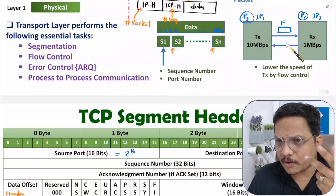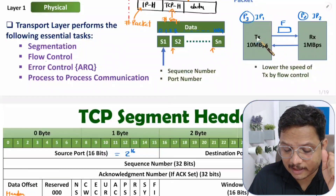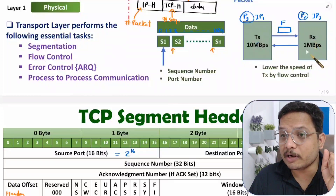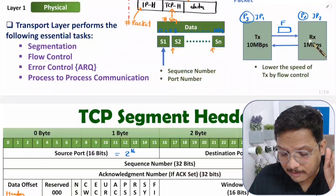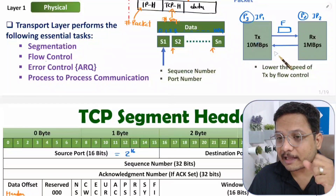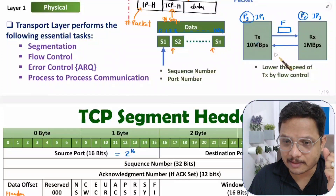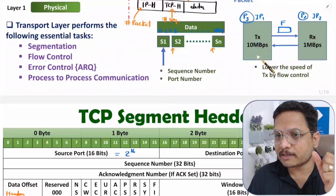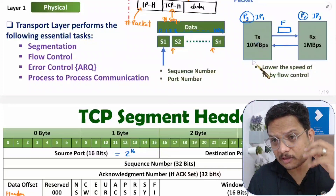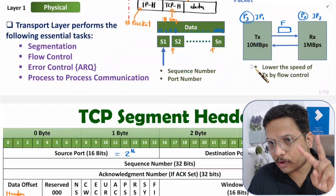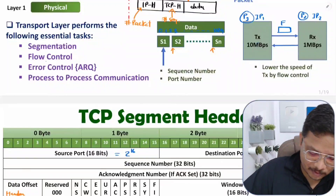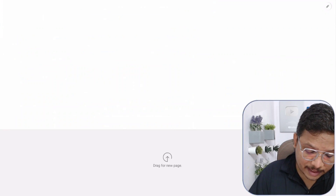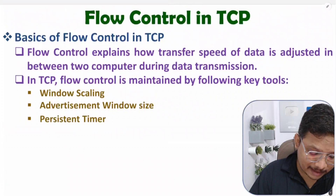There can be another scenario: if the transmitter is sending data at 10 Mbps but the receiver can handle up to 100 Mbps, then the receiver will give feedback to the transmitter saying you are slow. This is how flow control mechanism works — we control the data rate between two computers. In TCP, this is what I am going to explain in this video.